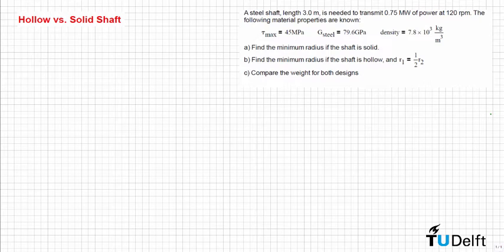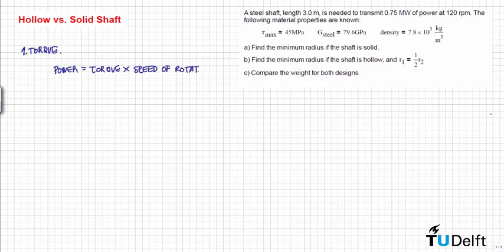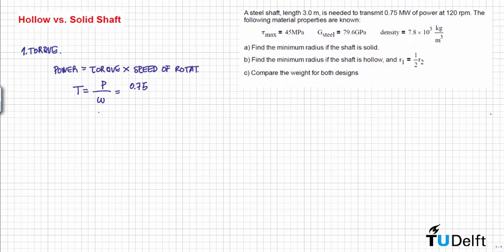First of all, we don't know how much is the torque that we need to apply, so this is the first thing that we need to calculate. We already know that power is equal to the torque times the speed of rotation. From this equation, we can calculate what is the torque T that we need to transmit. The torque is equal to power divided by the speed of rotation.